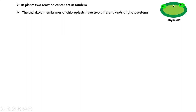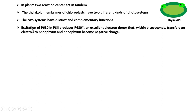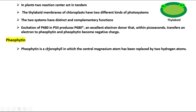In plants, two reaction centers act in tandem. The thylakoid membranes of chloroplasts have two different kinds of photosystems with distinct and complementary functions. Excitation of P680 in photosystem II produces excited P680, an excellent electron donor that within picoseconds transfers an electron to pheophytin, which becomes negatively charged. Pheophytin is a chlorophyll in which the central magnesium atom has been replaced by two hydrogen atoms.